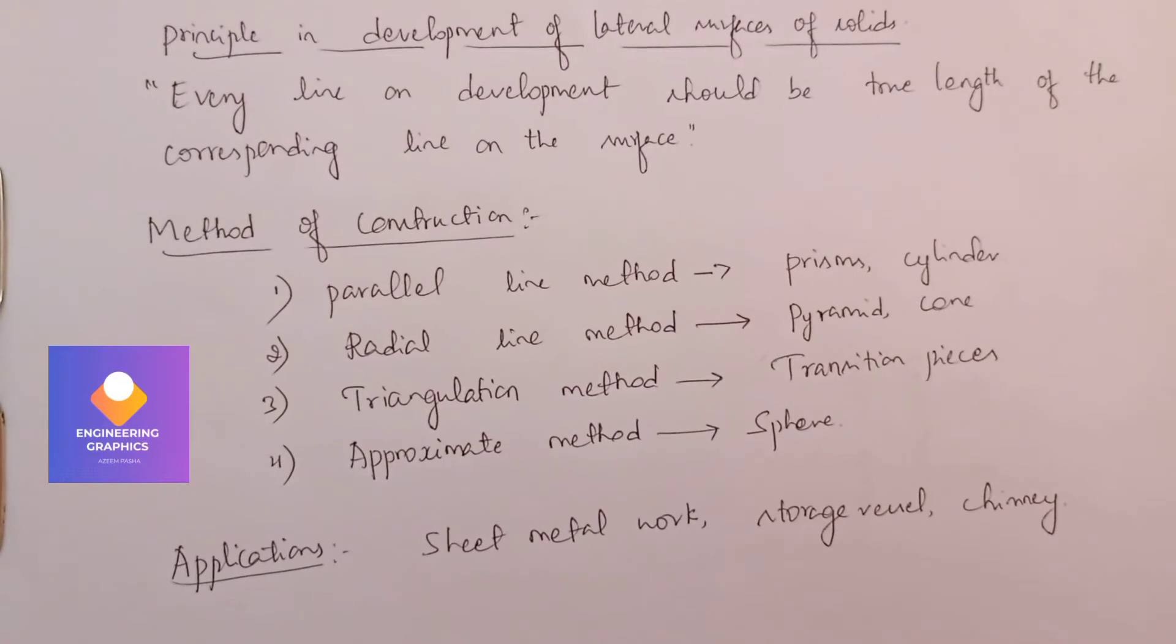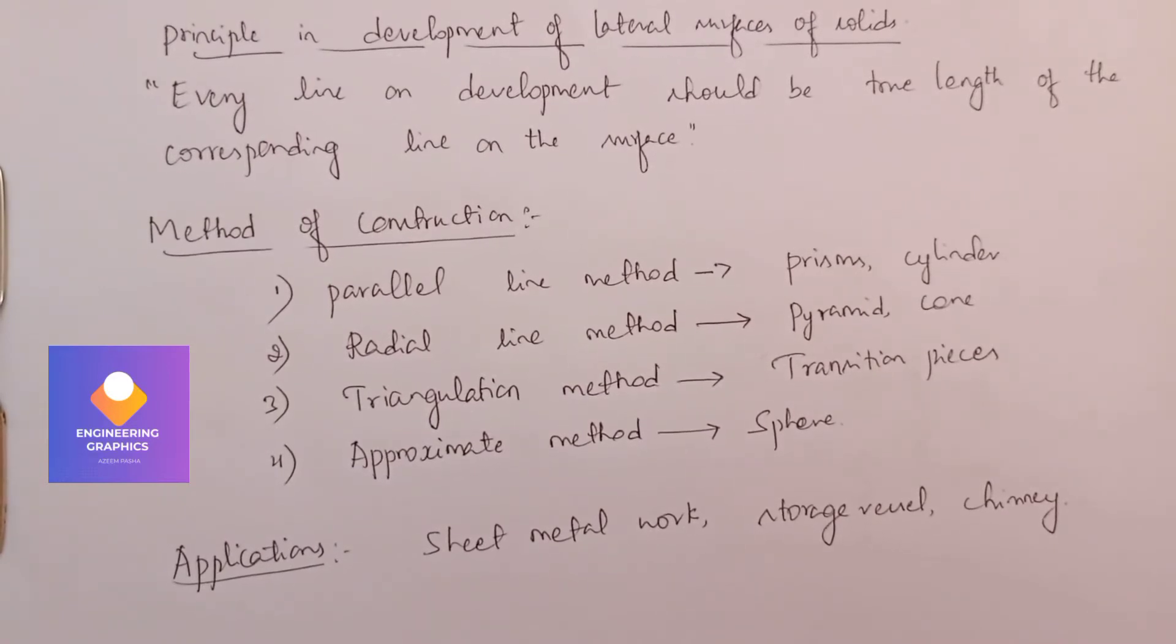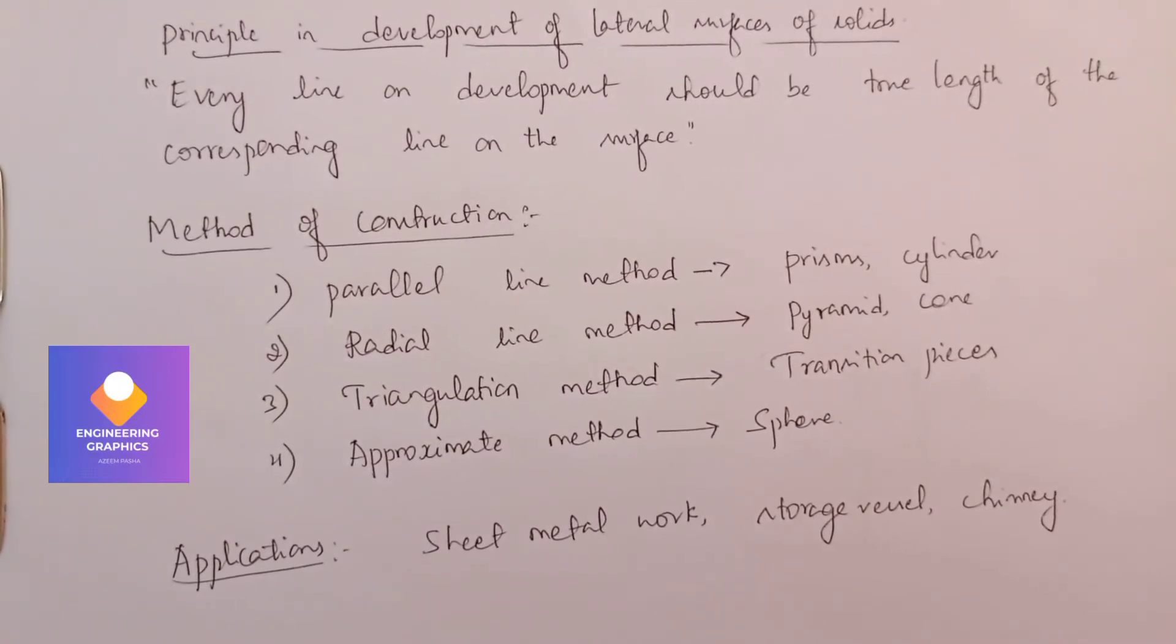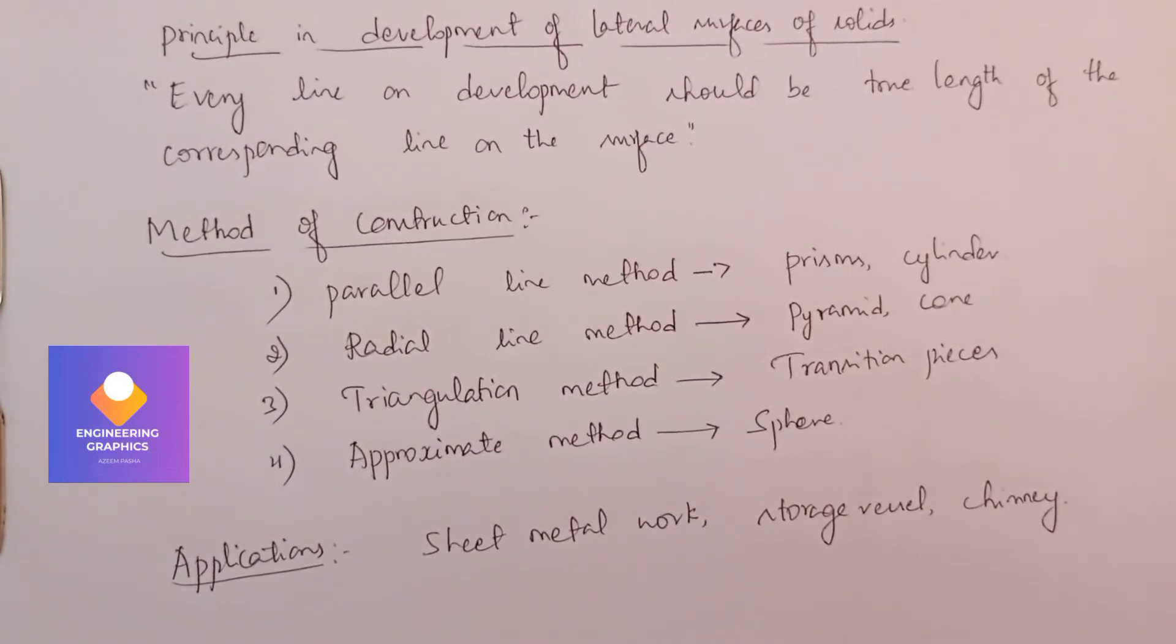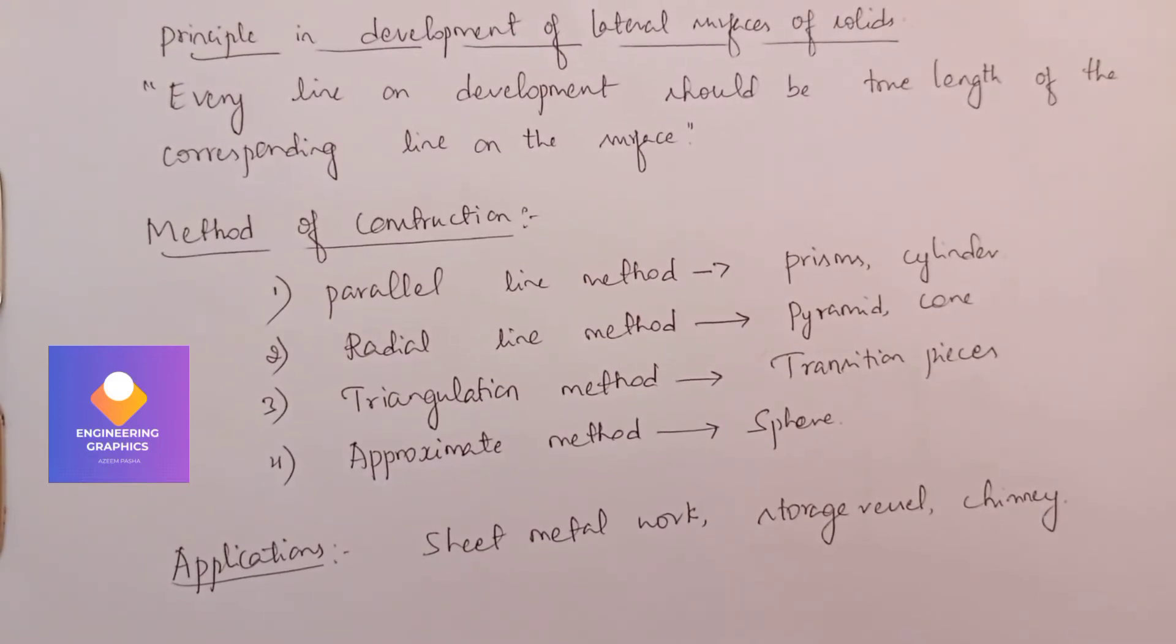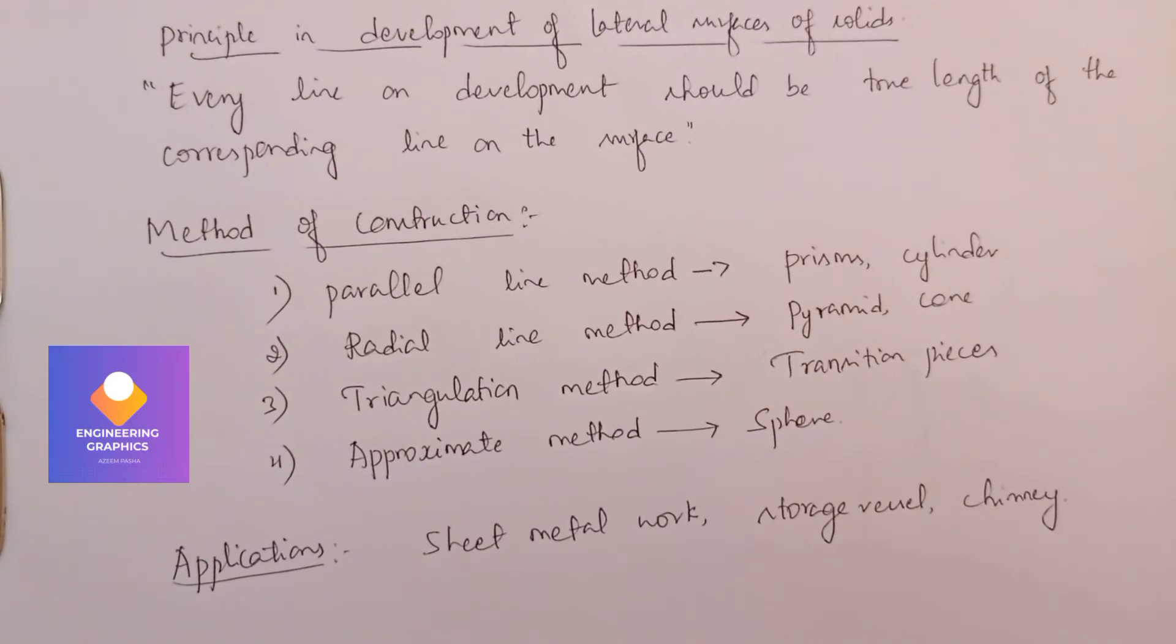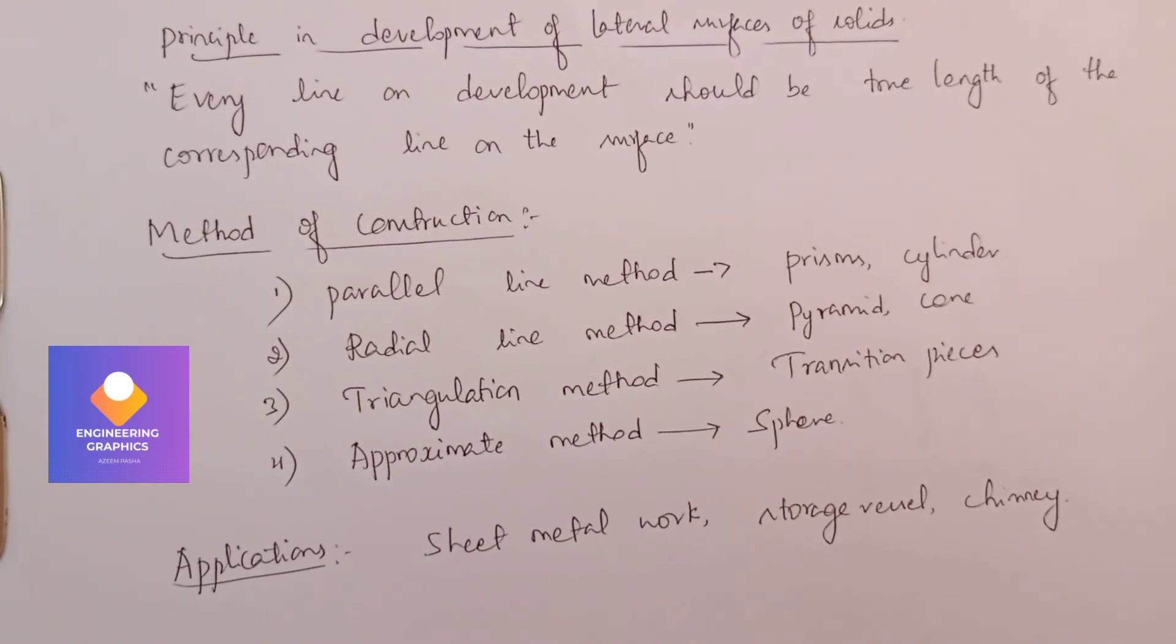First one is parallel line method - using this method we will be constructing prisms and cylinders. Pyramids and cones are constructed using radial line method, and transition pieces like triangular pieces will be constructed using triangulation method.